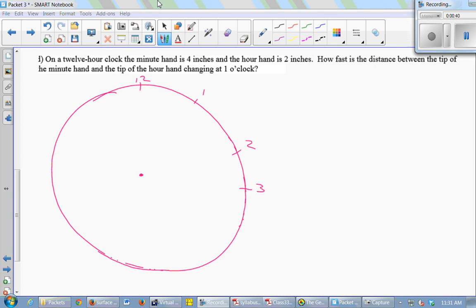So at one o'clock, my hour hand is pointing directly at the one and my minute hand is pointing directly at the 12. It's not quite to scale. There we go. And this is two and this is four. All right, so what I'm interested in is the rate of change between the tips of the hands. So I want to know the rate of change of that distance.